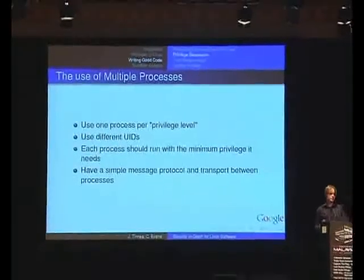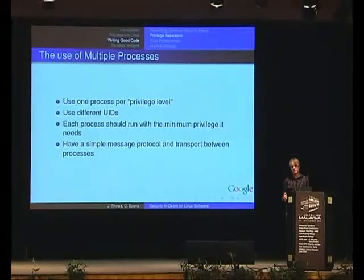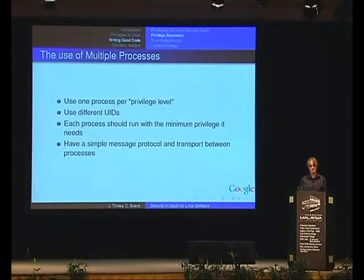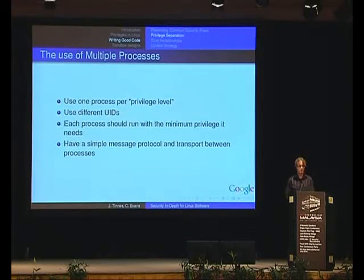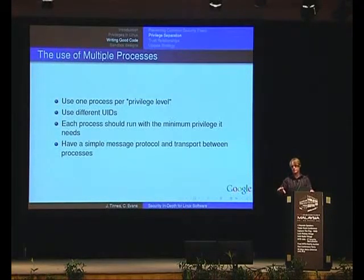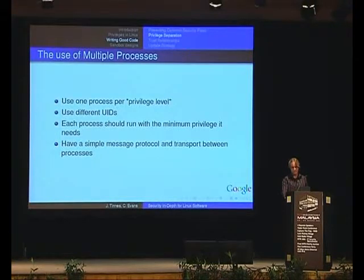You want to be looking at one process per privilege level in your application, which sounds complicated — like you might have an explosion of privileges. But typically, a lot of good designs can make do with just two processes. We'll see that with VSFTPD. Obviously, you want to use different users for the two processes, otherwise the processes can typically just take each other over. Each process should run with the minimum privilege it needs — that's the principle of least privilege.